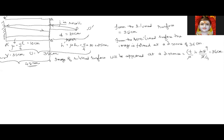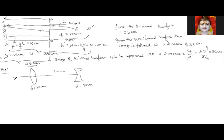Now let's take a combination: one convex lens with focal length F = 20 centimeters, and one concave lens with focal length F = 30 centimeters, separated by a distance of 60 centimeters. The object is at U = 10 centimeters from the convex lens.